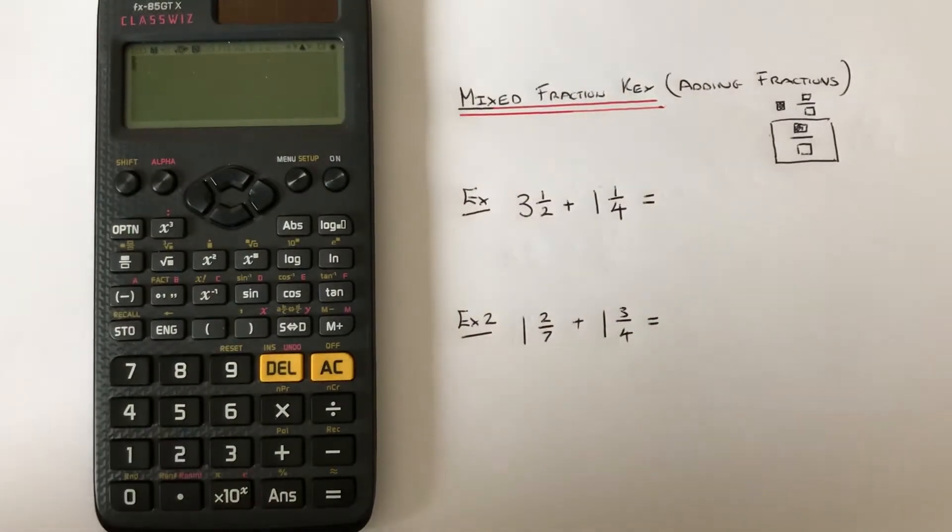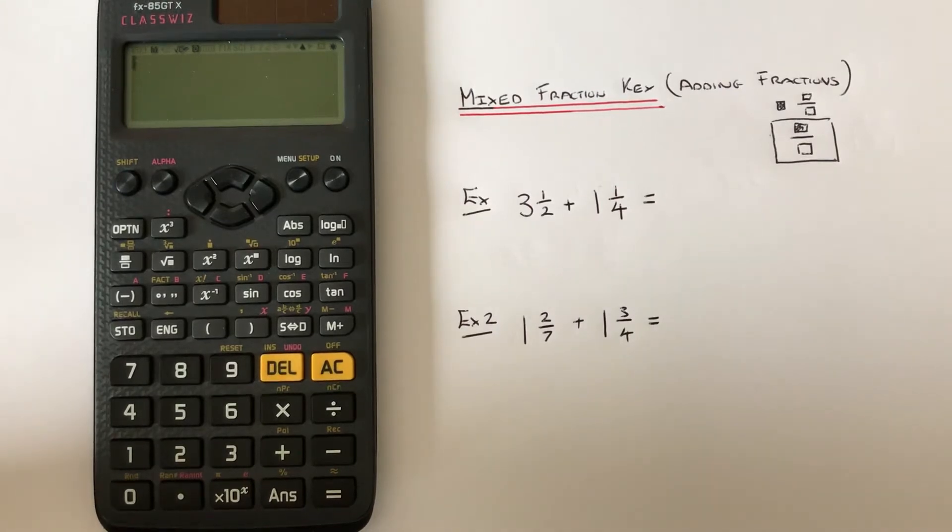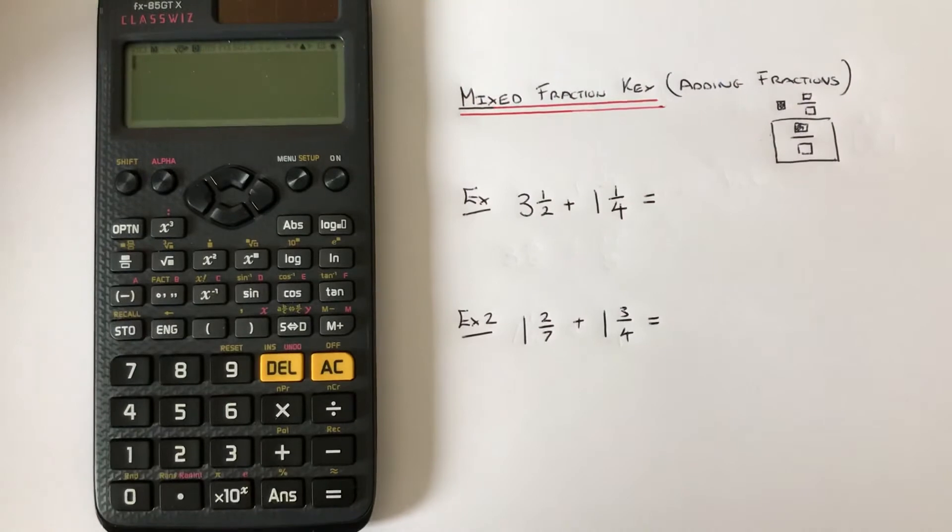Hi guys, welcome back. Today I'm going to show you how to add together two mixed fractions using the mixed fraction key on a Casio scientific ClassWiz calculator. To do this, you need to find the mixed fraction key, which is the second function of the normal fraction key.